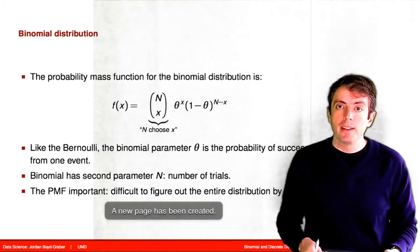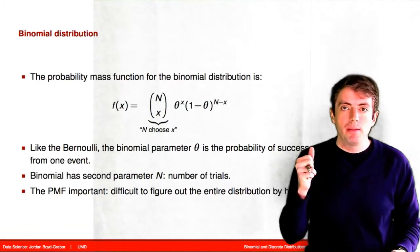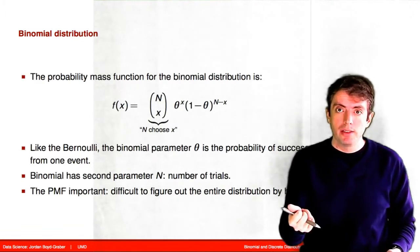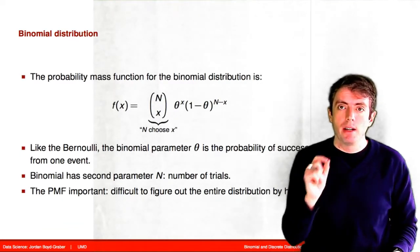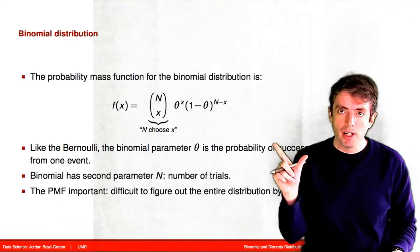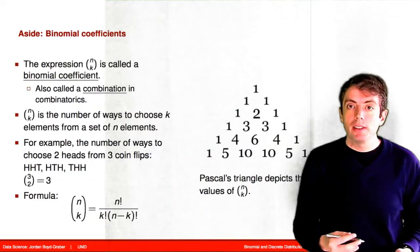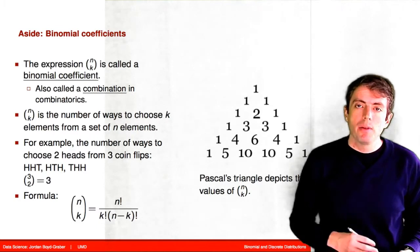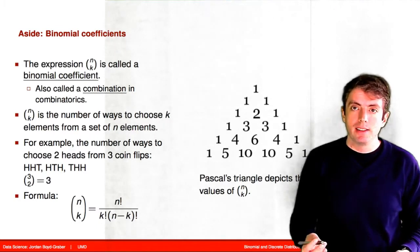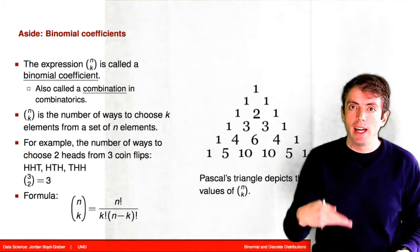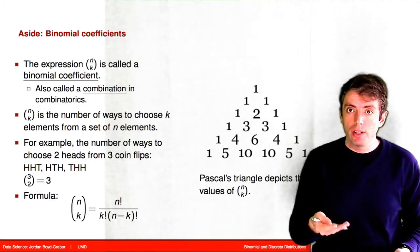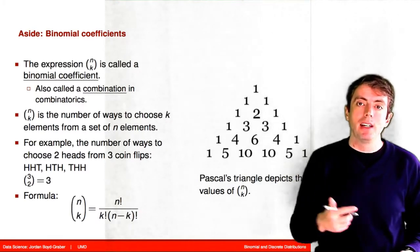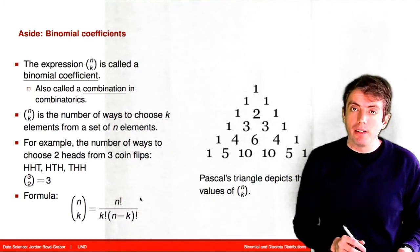You'll notice that this distribution has two parameters: the probability of success, just like in the Bernoulli distribution, but also the number of trials. So there are two parameters to this distribution. Let's talk about these binomial terms that are in the probability mass function — the number of ways that you can get x successes out of n trials. The formula for computing it involves factorial terms.